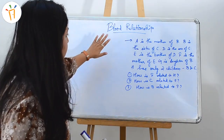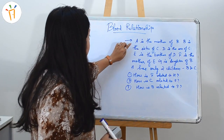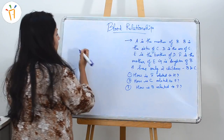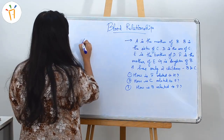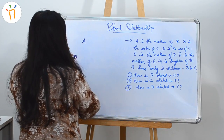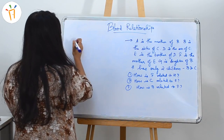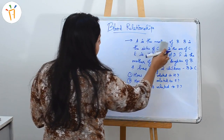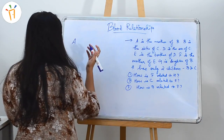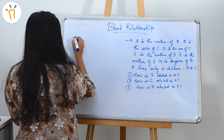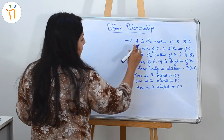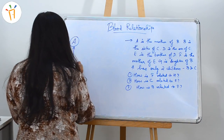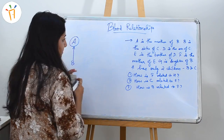Let's start with the first line of the passage — A is the mother of B. Let's write A here. And it is said A is the mother of B, so obviously if she is a mother that means it will be a female. And A is the mother of B, so we will write B like this.